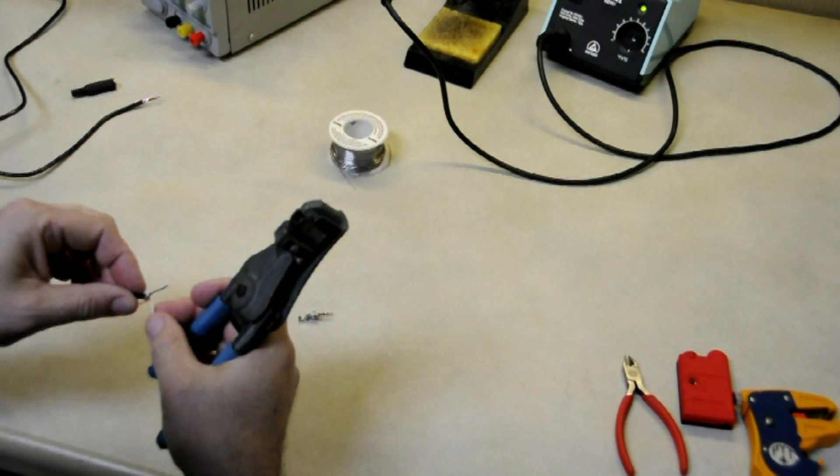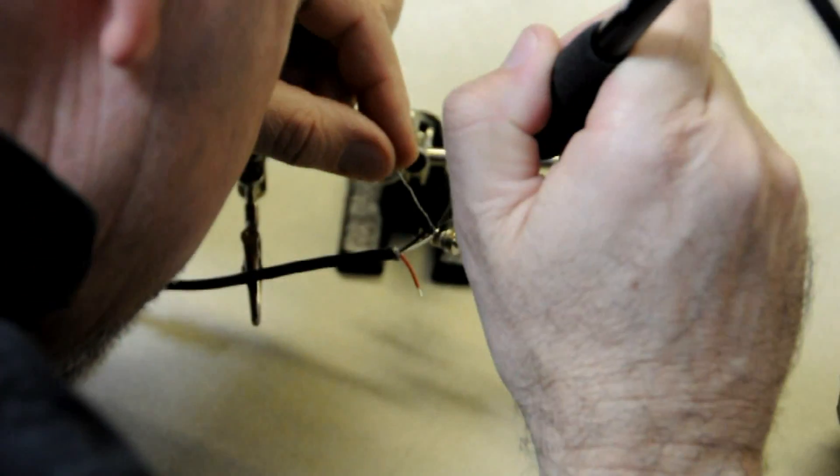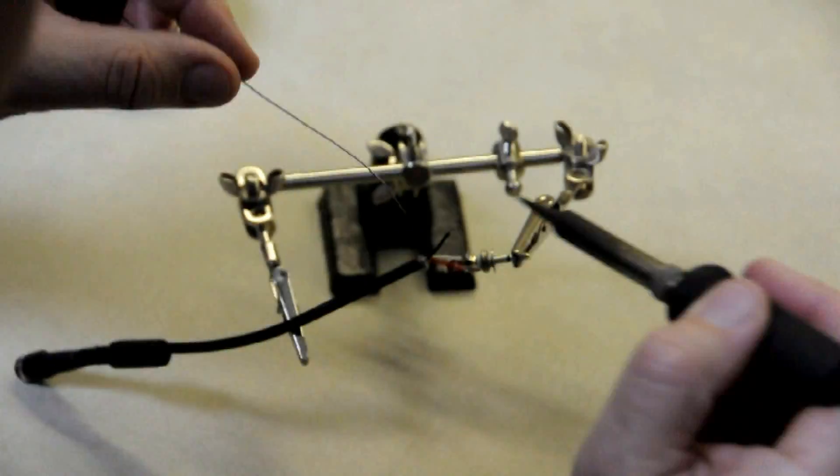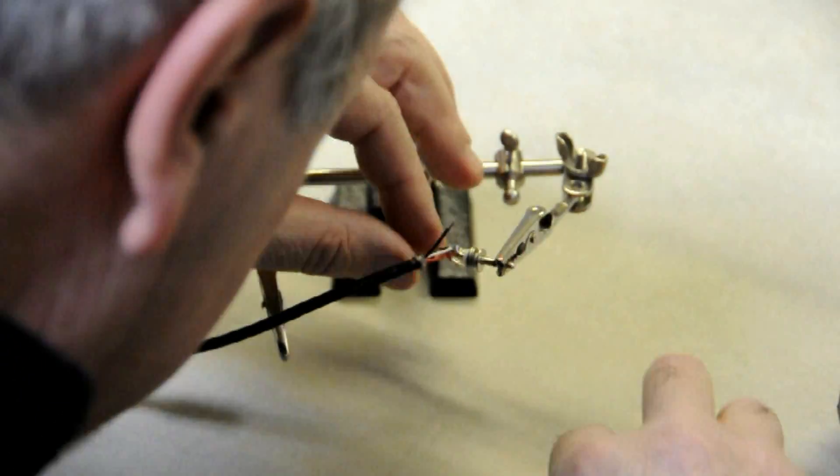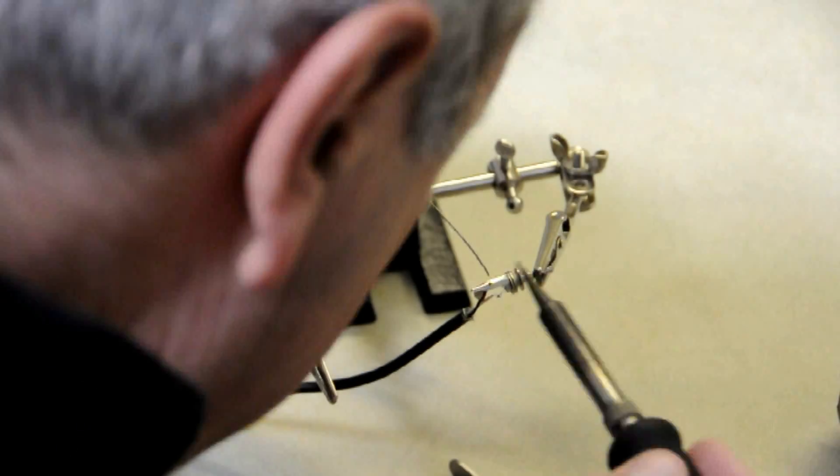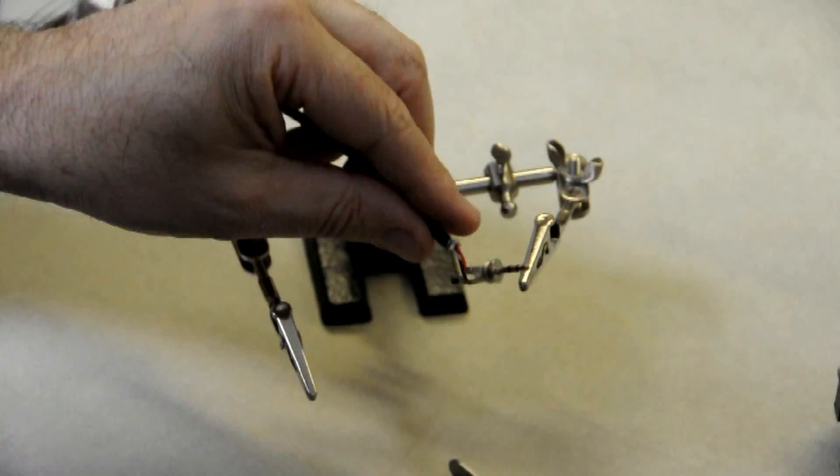The white wire must be connected to the tip contact. The red wire must be connected to the central ring contact. The black wire must be connected to the shield contact.